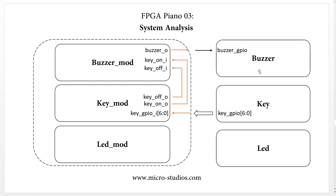When a key is pressed we play a song on the buzzer; when the key is released we stop the buzzer. But what kind of song do we need to play? We still need one more signal — the key value output signal. This tells which of the seven keys was pressed: key 0 or key 6, for example. The buzzer module will have a key value input signal to receive this, so when the buzzer module receives different key values, it can play different tones.